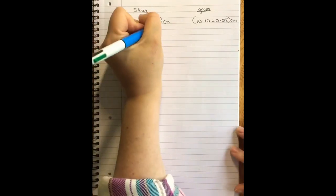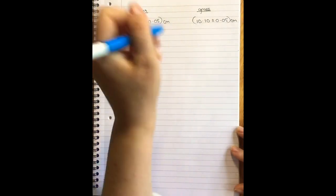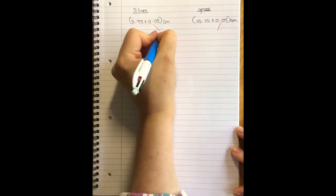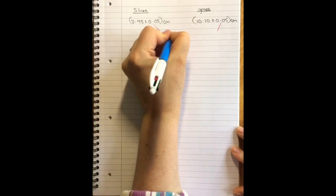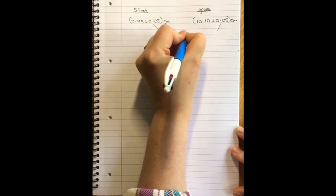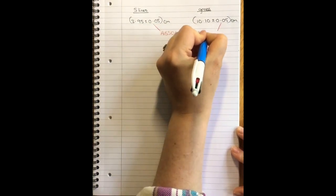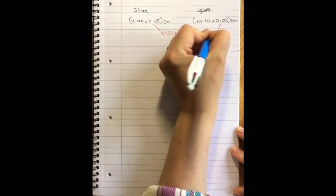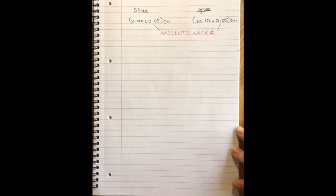Uncertainties that have the same unit as a measurement are called absolute uncertainties. So this one and this one, they are absolute uncertainties.